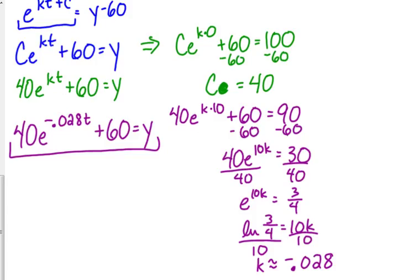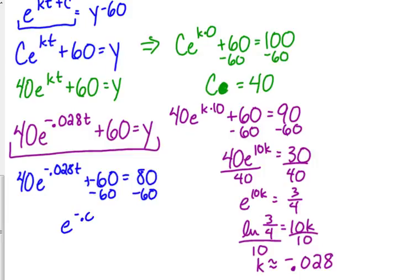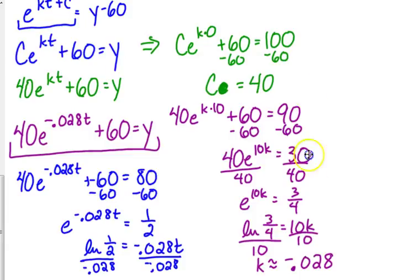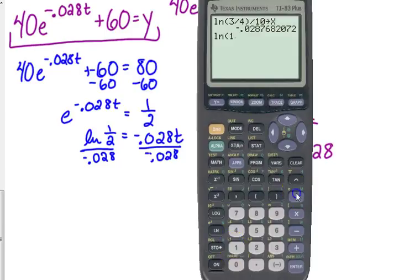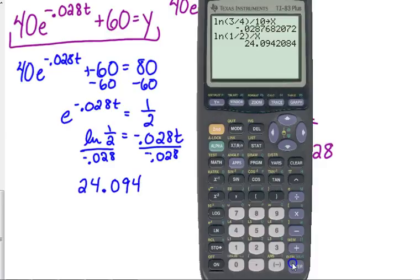How much longer will it take for the temperature to decrease to 80 degrees Fahrenheit? To answer the actual question, we set our equation equal to 80. And we're looking for how long that takes. Subtract 60. Then divide by 40. So that's 20 divided by 40, that's one half. Now the natural log of one half is equal to our K times T. Natural log of one half divided by X. 24.094 is T.